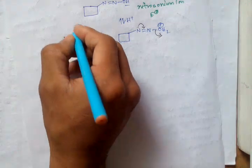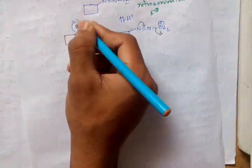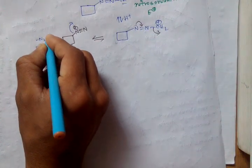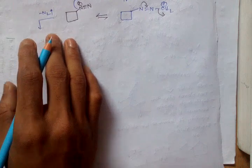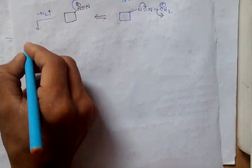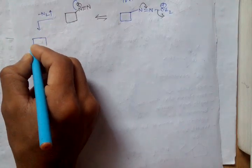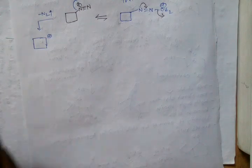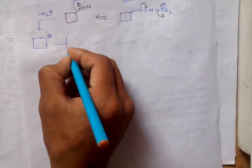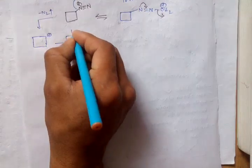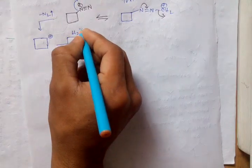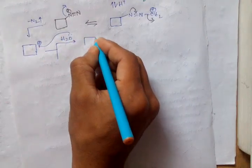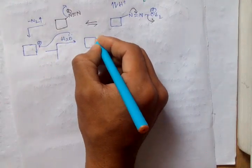Simply, this one is removed. Nitrogen is removed as a gas and we get this type of intermediate. When we add H2O, it directly attacks here to give this product.